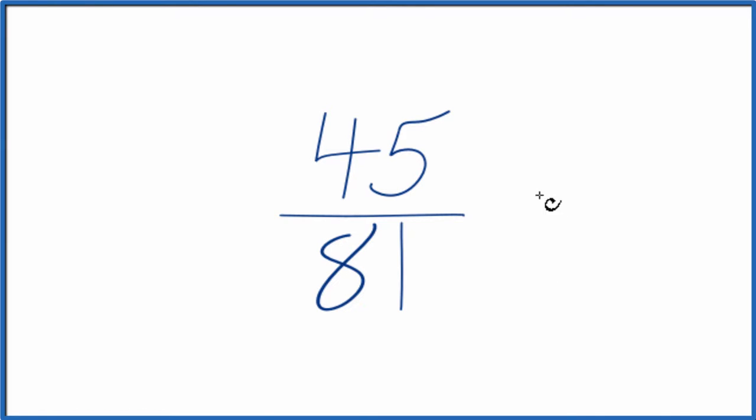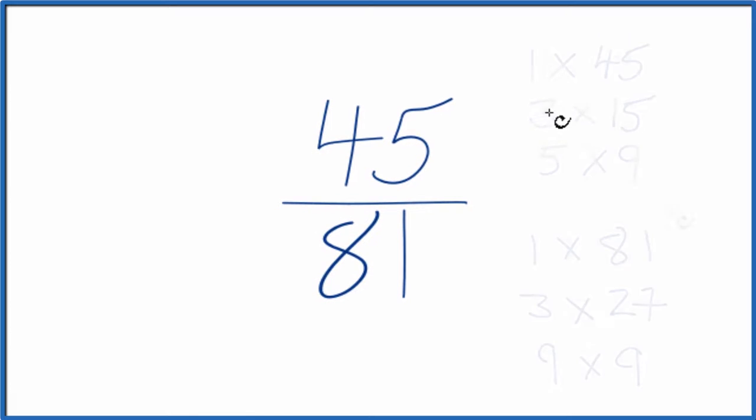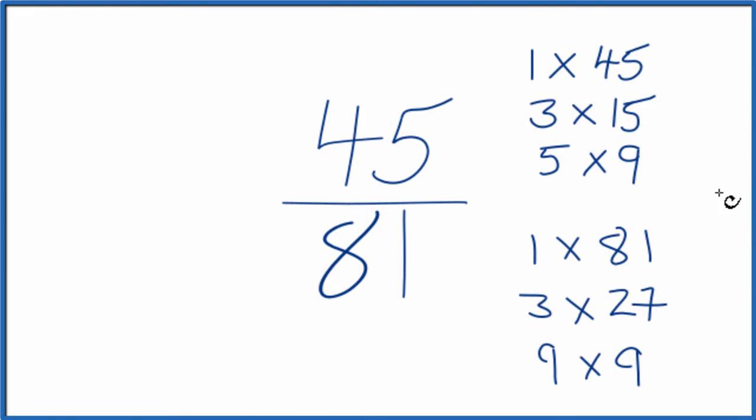To do that, we need to find a common factor, something that goes into 45 and 81 evenly. So these are the factors for 45 and 81. We're looking for the greatest common factor between 45 and 81, and that looks like the greatest common factor is 9.